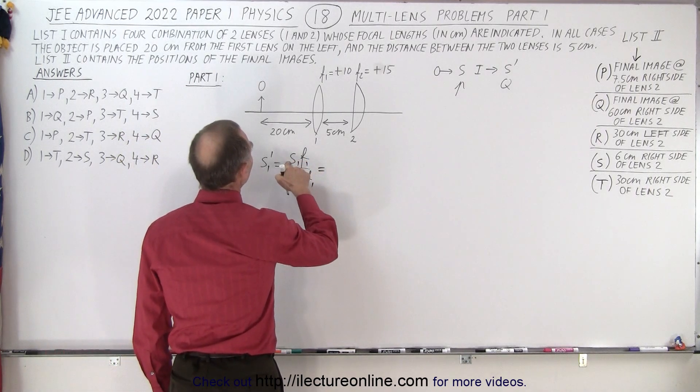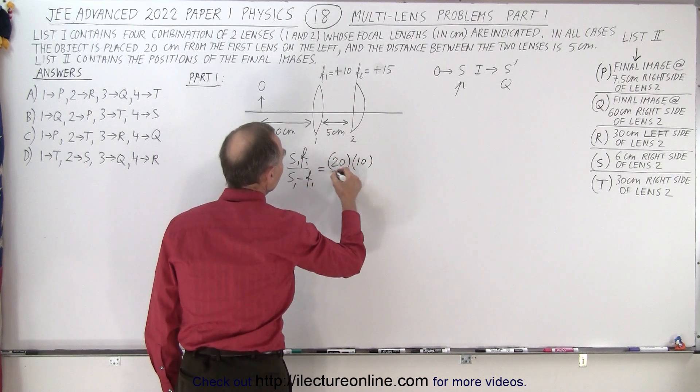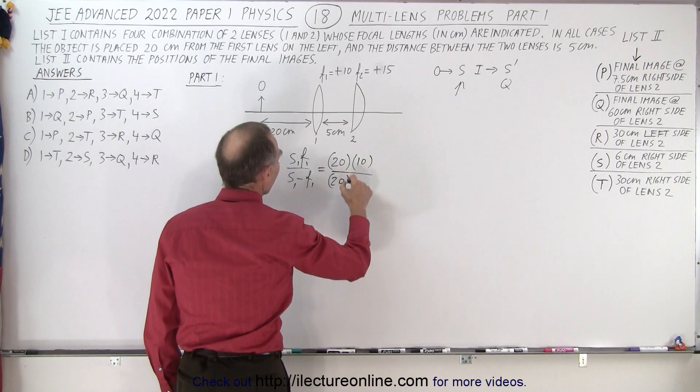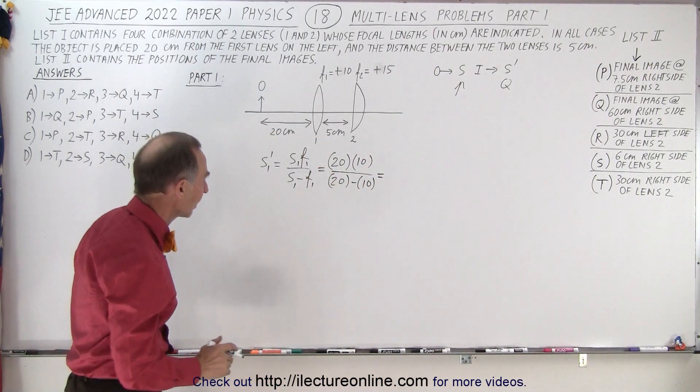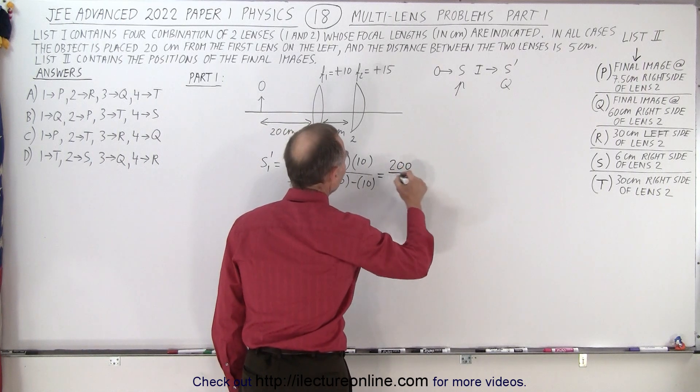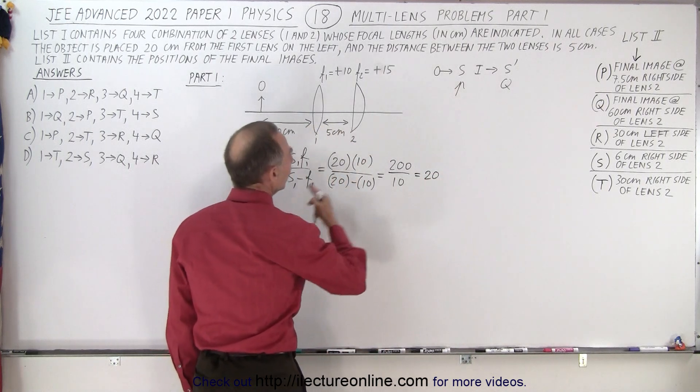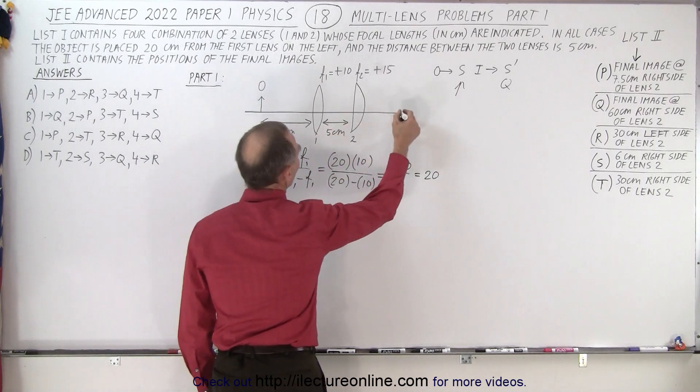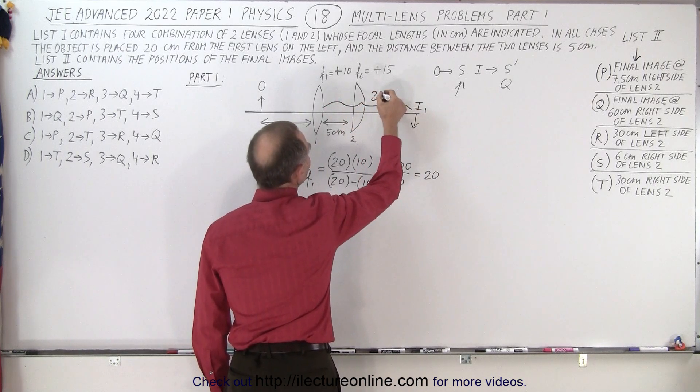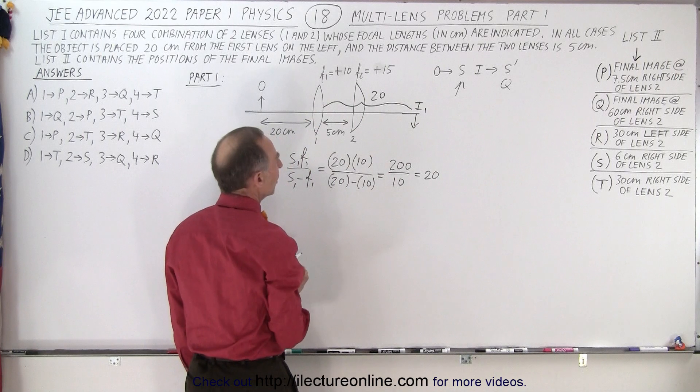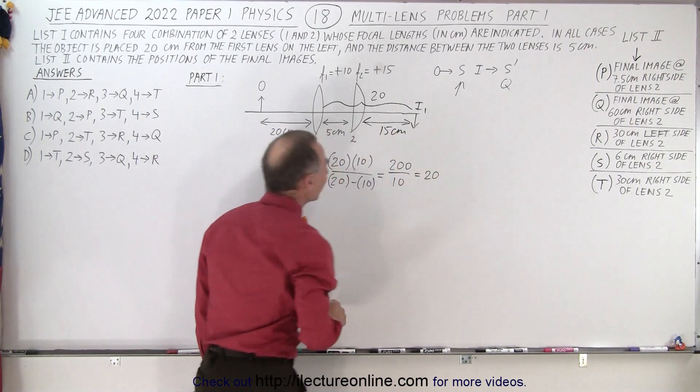So plug in the numbers. Object distance is 20 centimeters. The focal length is a positive 10. S1, that is the object distance, minus the focal length of 10. So there we're dealing with the first lens and the first image caused by that lens. So here we have 200 divided by 10, which is equal to 20. And so what that means is that it is 20 centimeters past the first lens. So here we'll have an image. So this would be image one. And that would be at a distance of 20 centimeters past the lens because it's positive 20, which causes it to be 15 centimeters to the right of lens two.